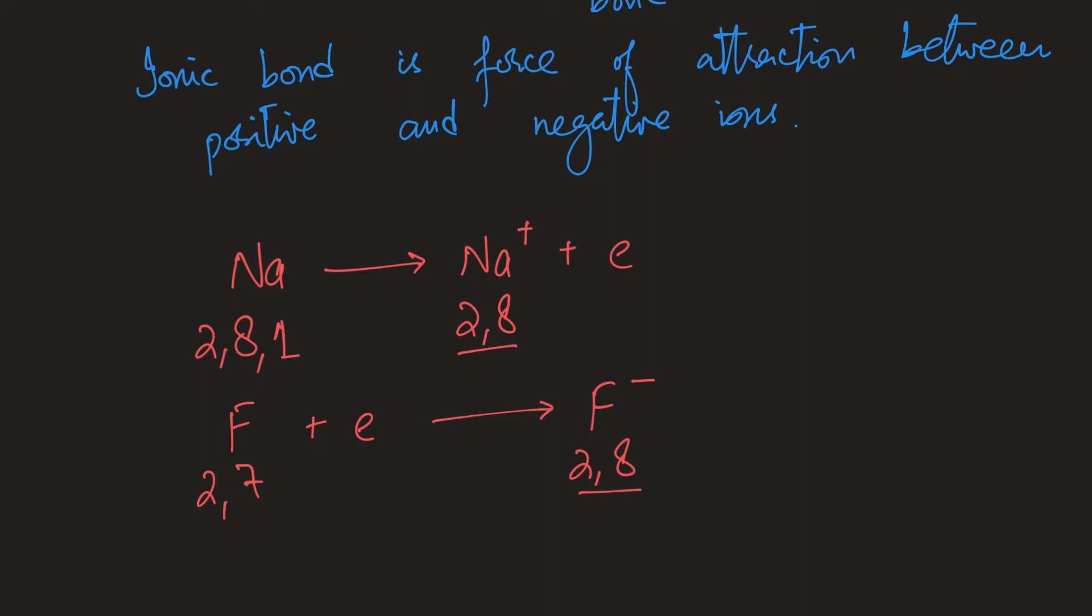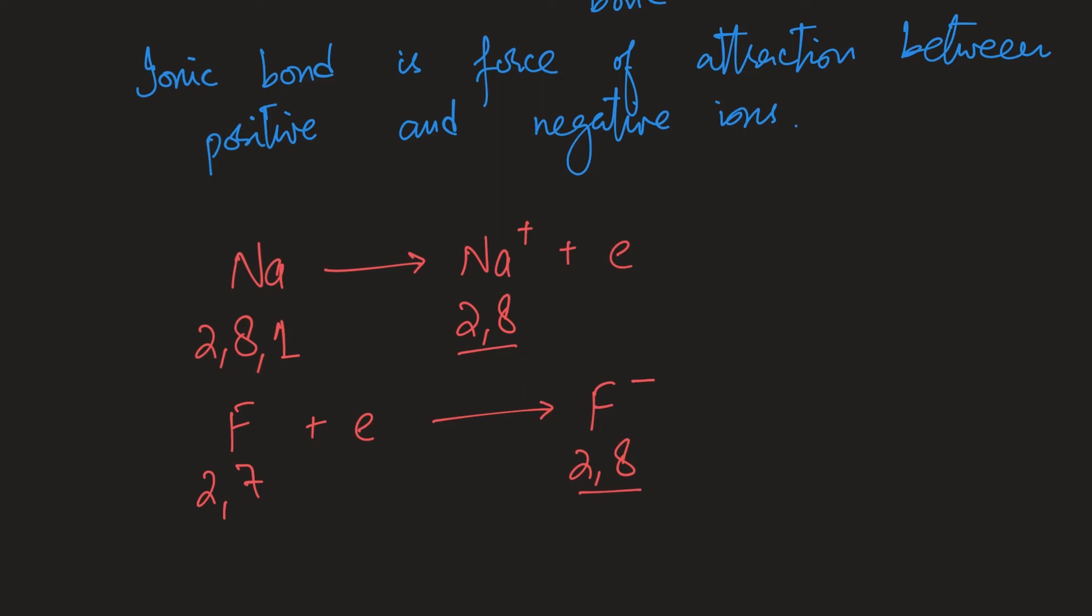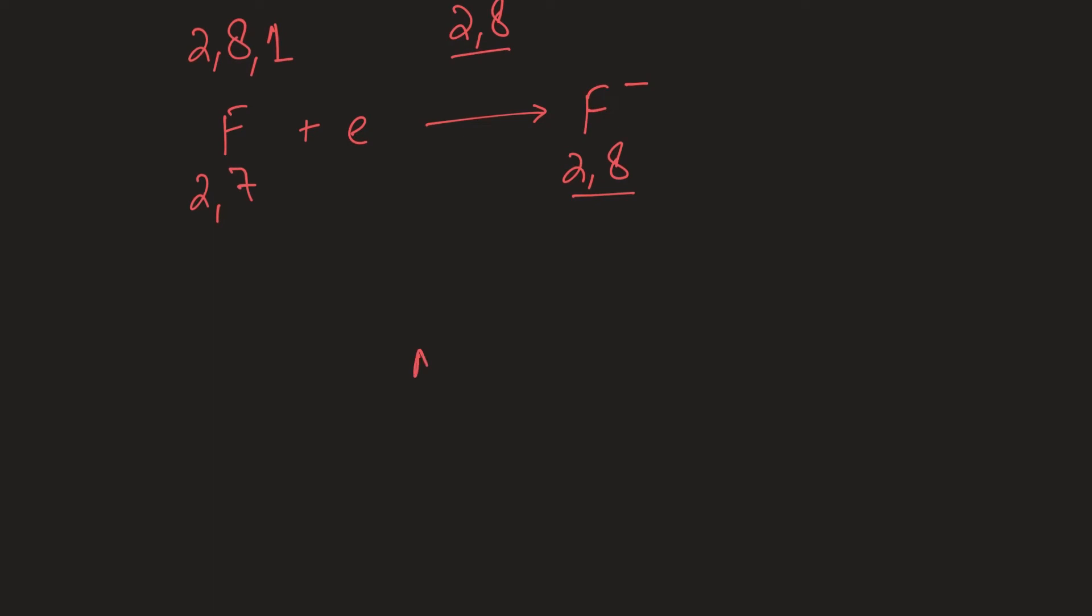And because sodium ions are positive and fluoride ions are negative, they're going to attract each other. So every sodium ion will be attracted by fluoride ion on six sides. So there'll be fluoride ions above and below, to the right and to the left, and behind, and in the front. So there's going to be this lattice that is going to form—there is going to be a network.